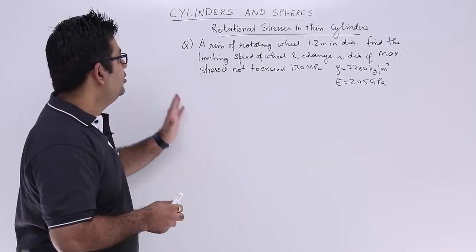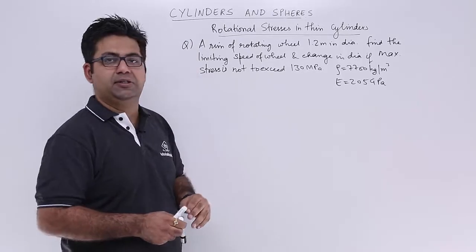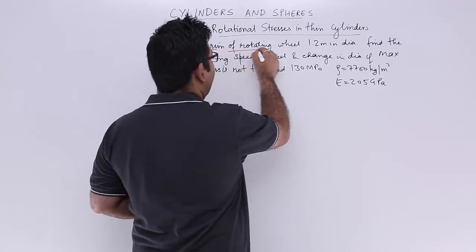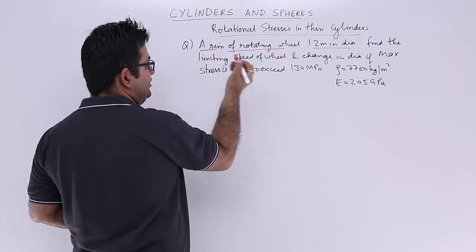Now let's look at a numerical problem on rotational stresses in thin cylinders. The question says: a rim of a rotating wheel 1.2 meters in diameter.